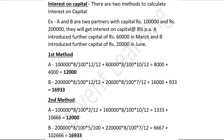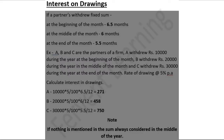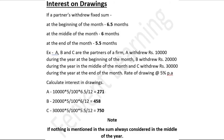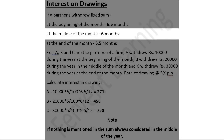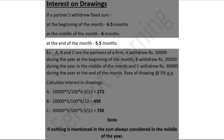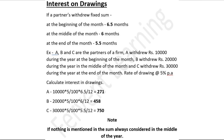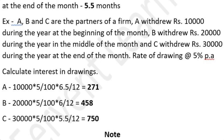So we can use either the first method or the second, but it is very easy to use the first one. We will get the same answer by both methods. Next, we will calculate interest on drawing. For the calculation of interest on drawing, remember: if capital is withdrawn at the beginning of the year, we use 6.5 as months. If capital is withdrawn in the middle of the month, we use 6 as months. If capital is withdrawn at the end of the month, we use 5.5 as months. Suppose A, B, and C are three partners — A withdraws rupees ten thousand at the beginning of the month, B withdraws rupees twenty thousand in the middle of the month, and C withdraws thirty thousand at the end of the month. The rate of drawing is five percent per annum.